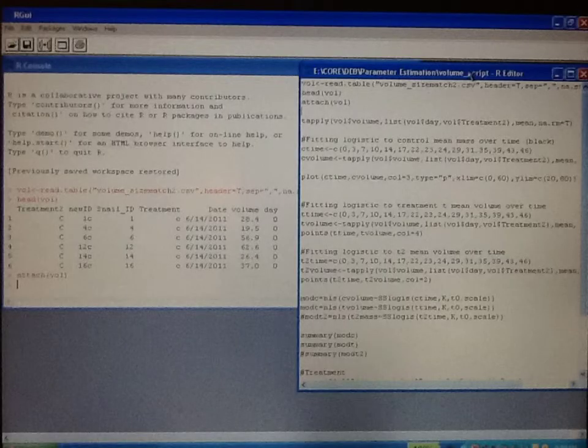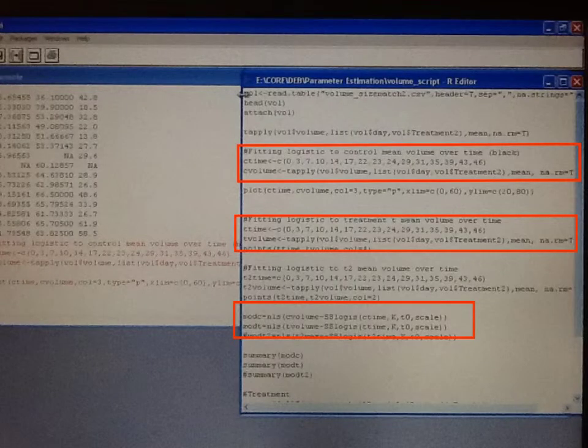After opening R, the first step is to read in your data. This works best if you have a data file that is in the CSV format. This next step uses the mean volume over time for control and infected snails to formulate logistic models for both groups.